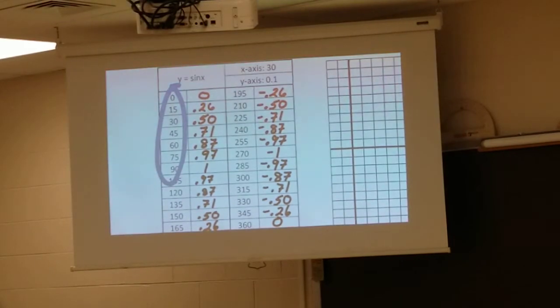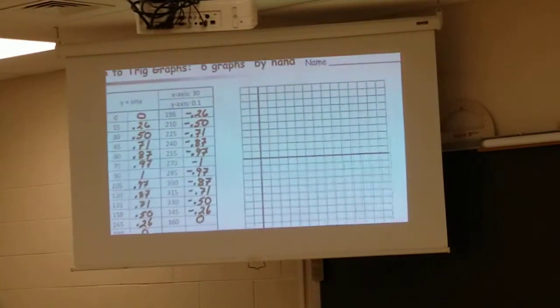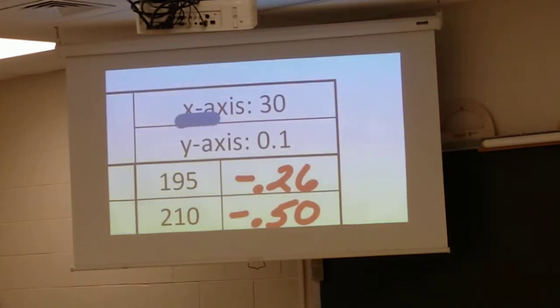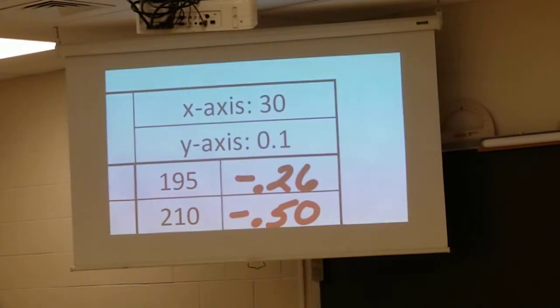And then again, the Y values, those are these points on the unit circle. So you're actually graphing angles and points from the unit circle. To help you do that, we have a scale that we use where the X axis is going to go by 30 degrees. And then the Y axis is going to go by 0.1. This is just a nice scale to help us to be able to fit these numbers onto an X and Y axis.